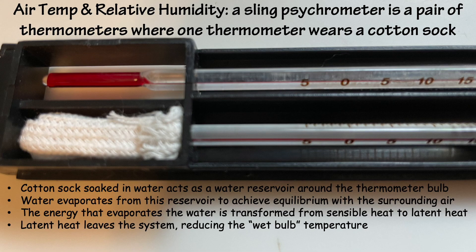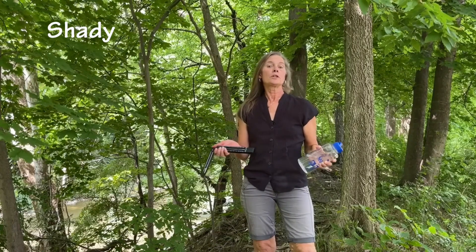To measure the air temperature and relative humidity, we'll use a sling psychrometer. This consists of two identical thermometers mounted together. One thermometer wears a little cotton sock that soaks in water. The first thermometer, referred to as the dry bulb, records the air temperature. The cotton sock on the second thermometer acts as a small water reservoir around the wet bulb. When we spin the psychrometer around, water evaporates to achieve equilibrium with the water vapor in the surrounding air. As it evaporates, energy leaves the system, cooling the thermometer and reducing the wet bulb temperature.